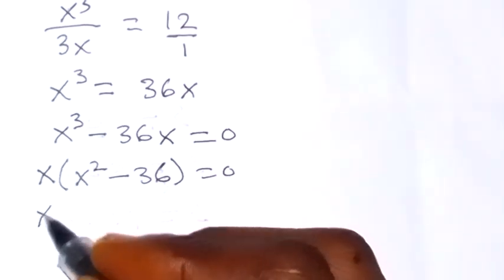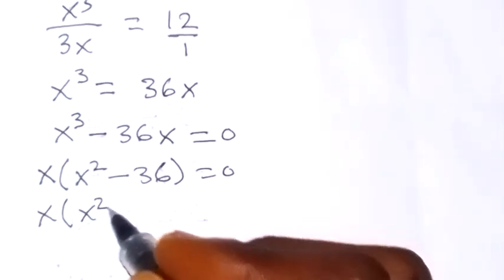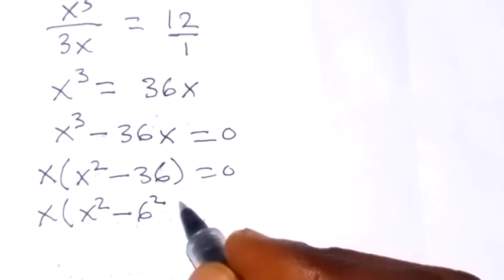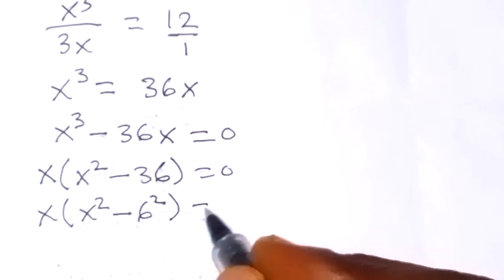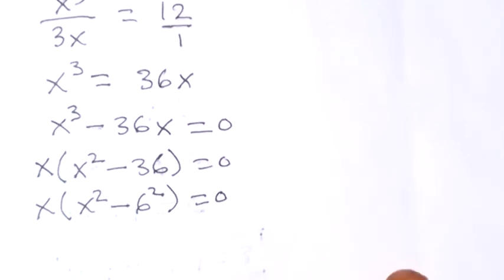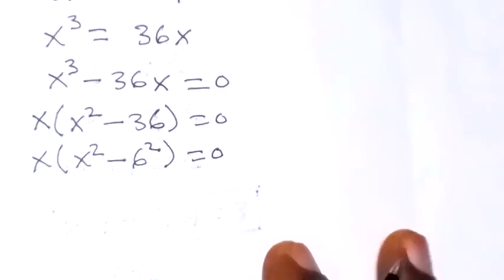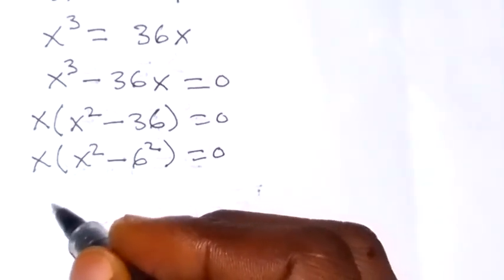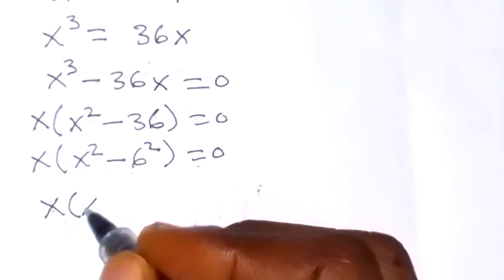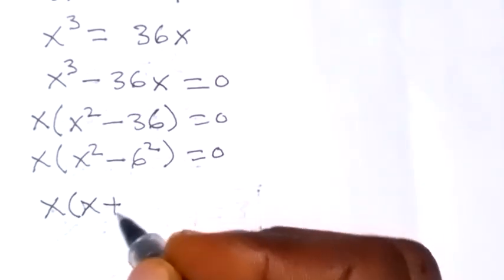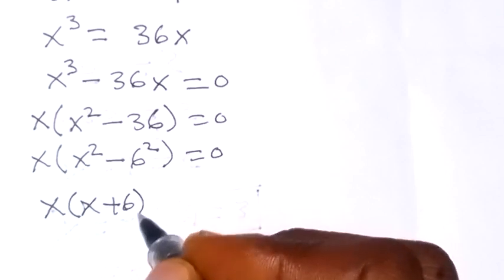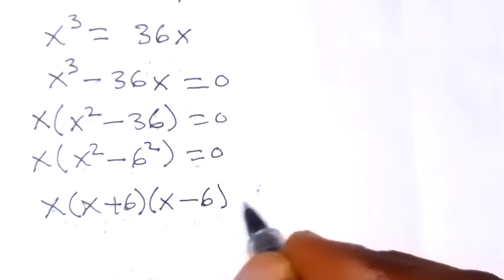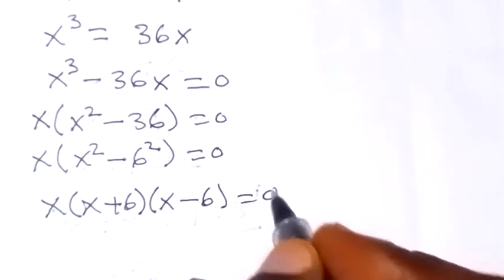We can write this in the form of difference of two squares. That is, x into bracket x squared minus 6 squared equals to 0. When we factor this difference of two squares, we have x into bracket x plus 6, then into bracket x minus 6, equals to 0.